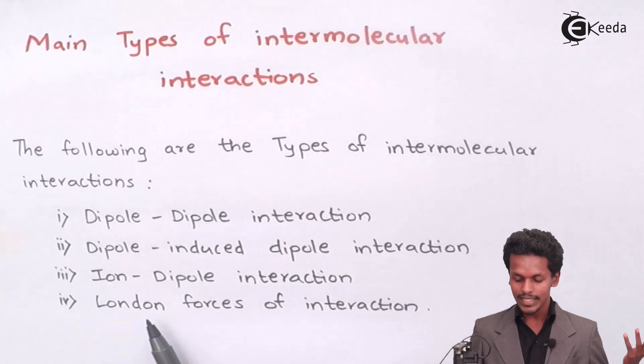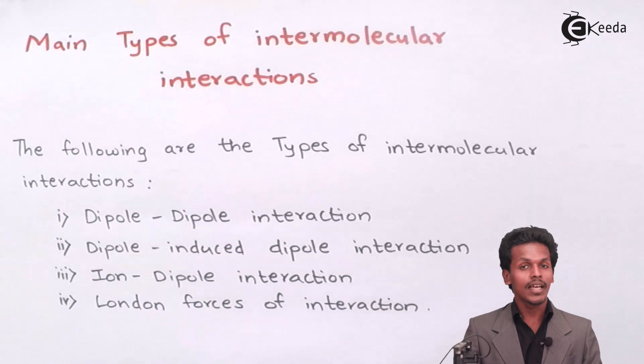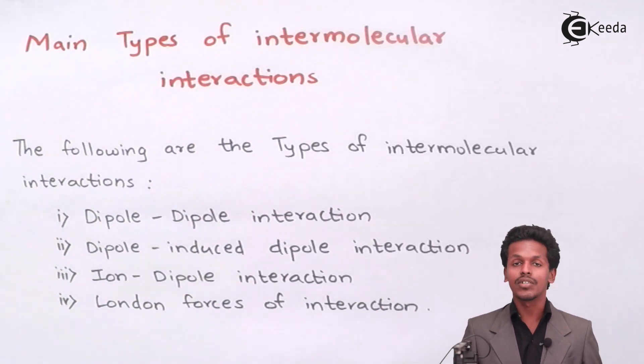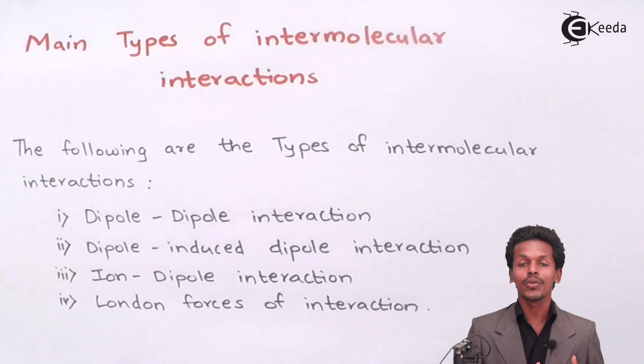Now the last one is London force of interaction. These are basically present in all molecules but specifically in non-polar molecules, because non-polar molecules don't have a charge difference between them. This kind of London force is a very weak force present in non-polar molecules. These are the types of interaction that take place between the molecules of an element in a compound or atoms with each other.